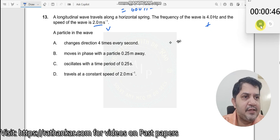See, whenever V and F is given, they will either ask you to find out the value of T or maybe the value of lambda or anything else. First, a particle in the wave, there are four options. Reading four options will take a long time. So what you do is first find out these values.